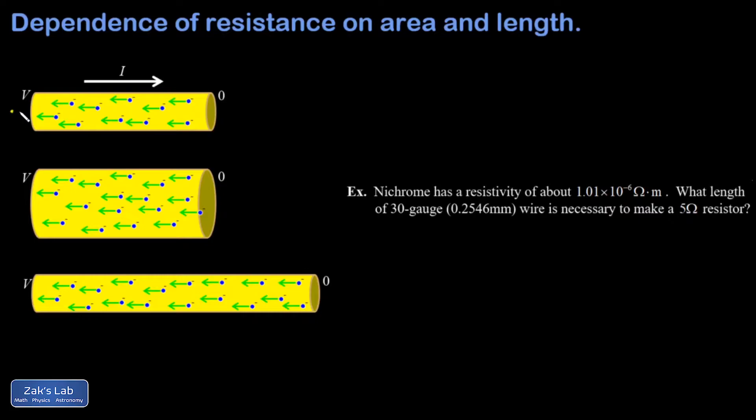This energy loss is what results in the constant drift velocity of the electrons. If there was no energy loss here, the electrons would be speeding up and speeding up as they went from low to high potential.